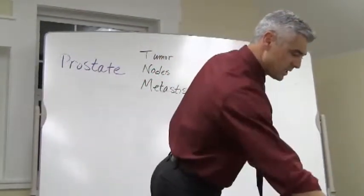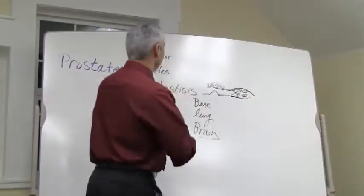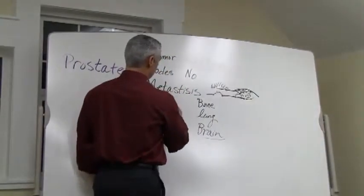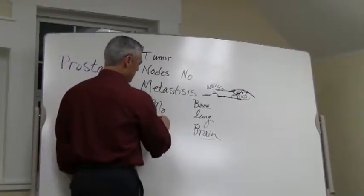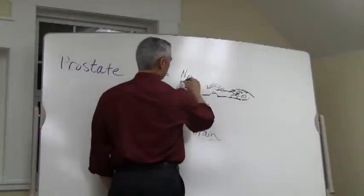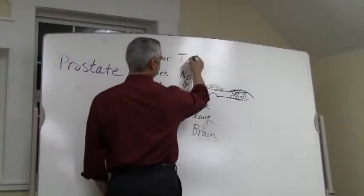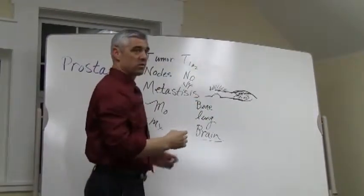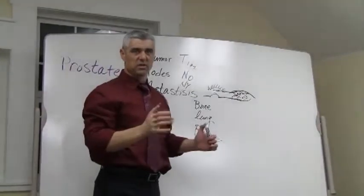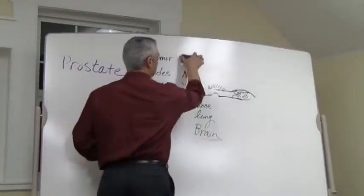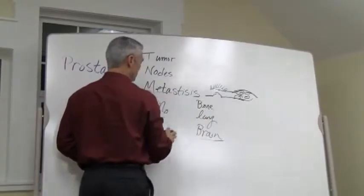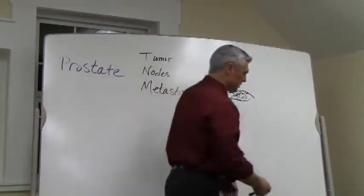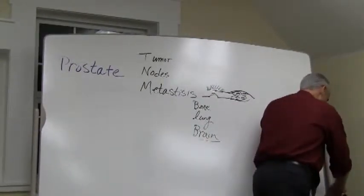When we look at the TNM score: if the nodes are not involved, it comes back as N0; if there's no metastasis, it comes back as M0. If it's gone beyond, it's NX or MX. Tumors are graded as 1, 1A, 1B, 2A, 2B, and so forth. TNM is very commonly used to evaluate bone and prostatic cancers.